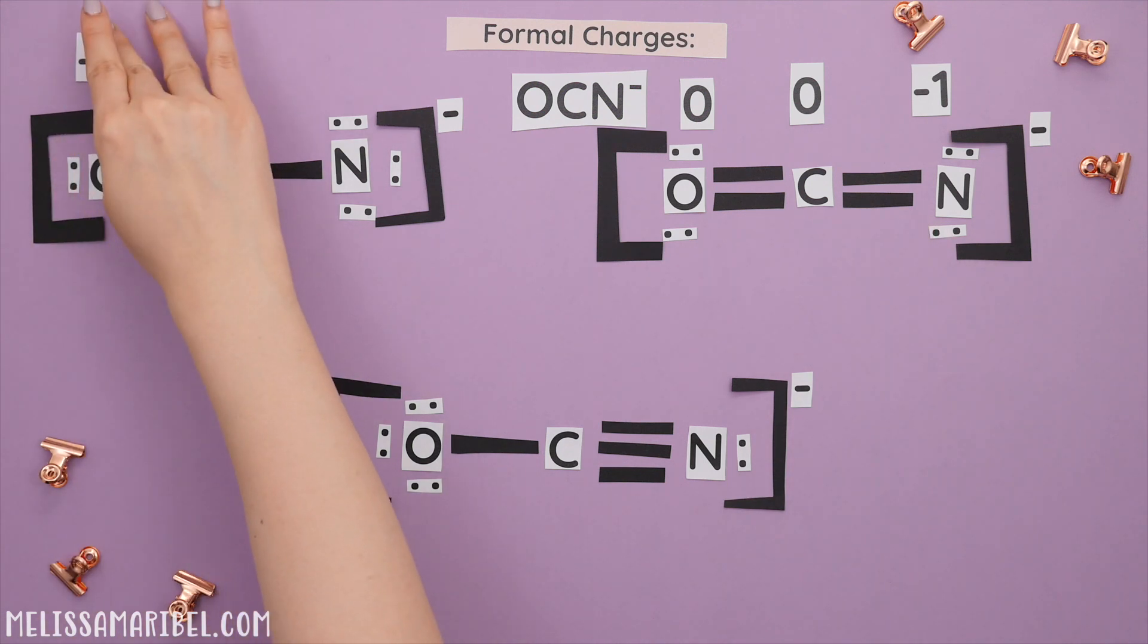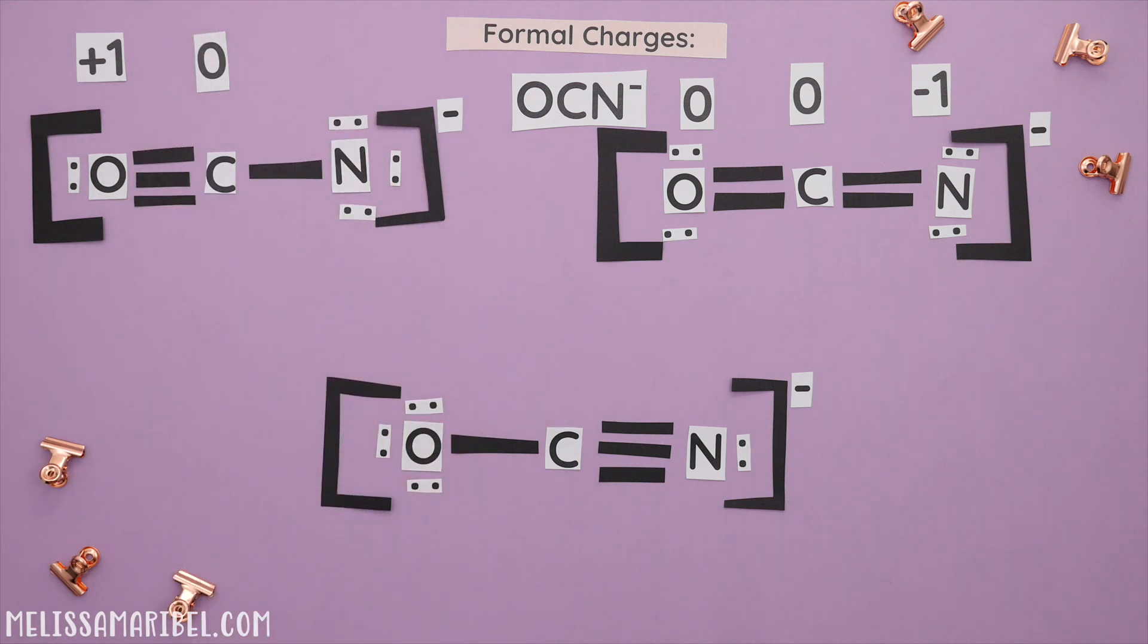Here are the formal charges for the next structure. Once again, oxygen prefers to be negative. And this one is out since the formal charge is a plus one. This last structure is the most stable due to the most electronegative atom of oxygen being negative. And you will also see that the central atom prefers to have a formal charge of zero.